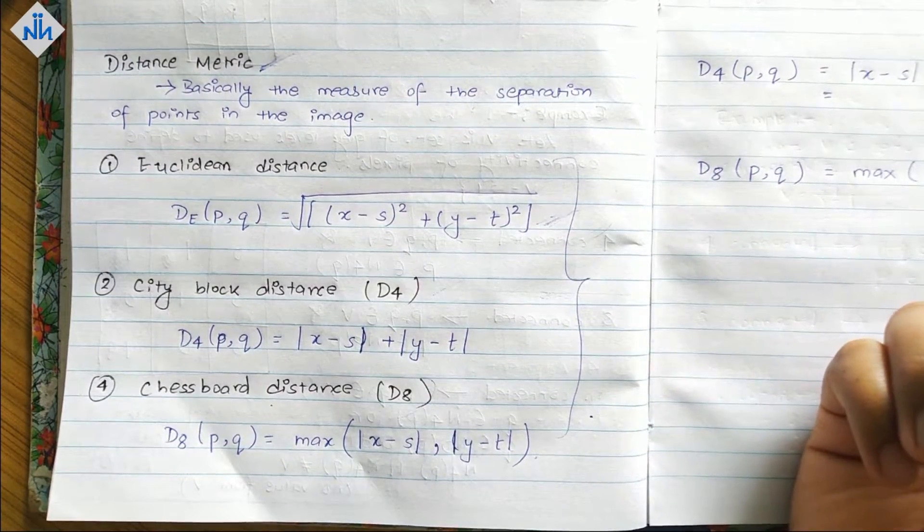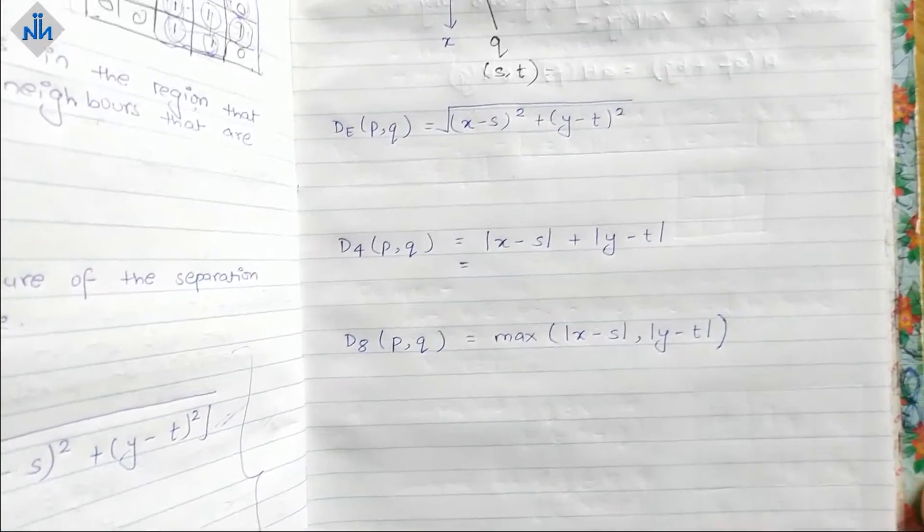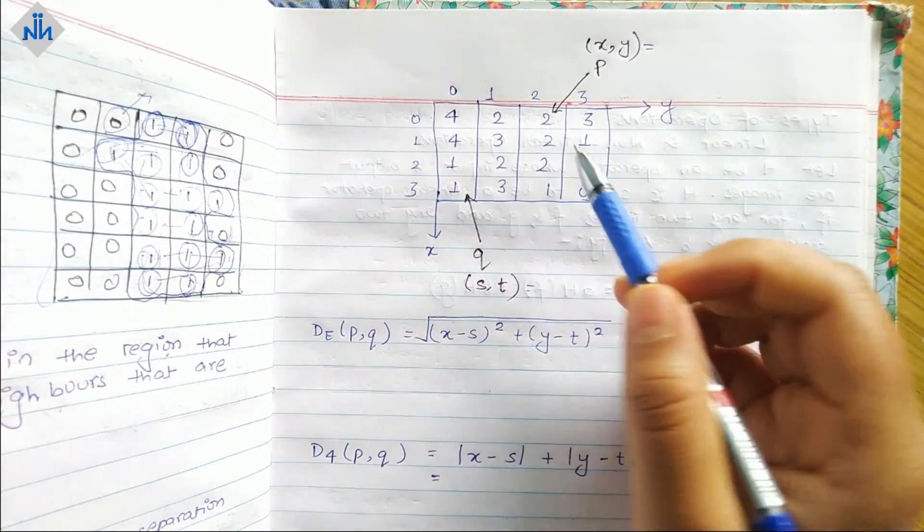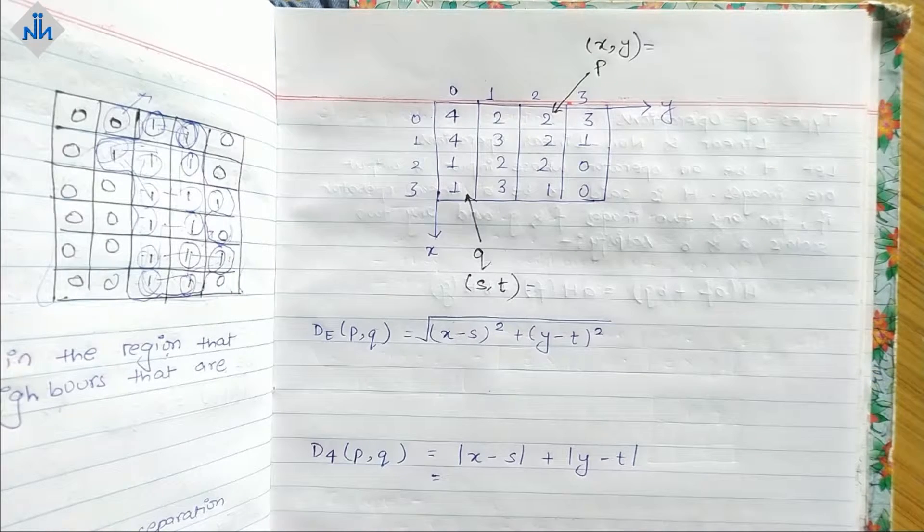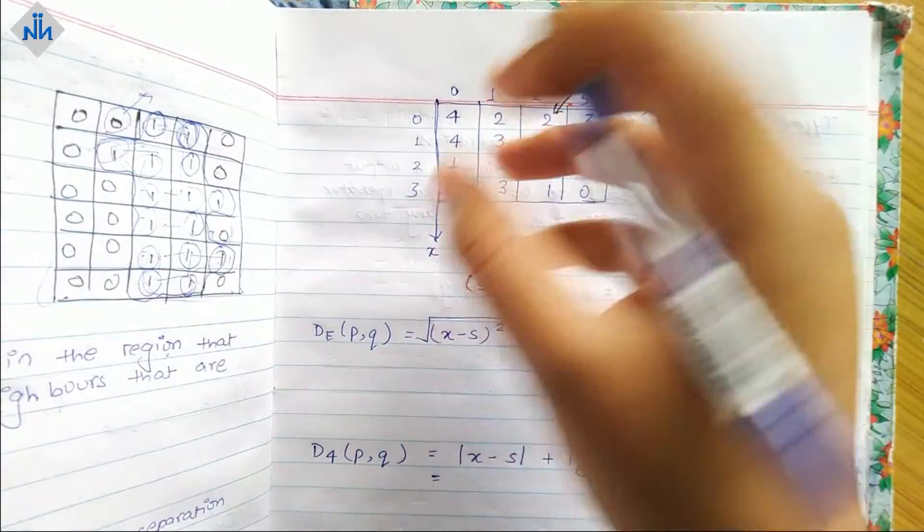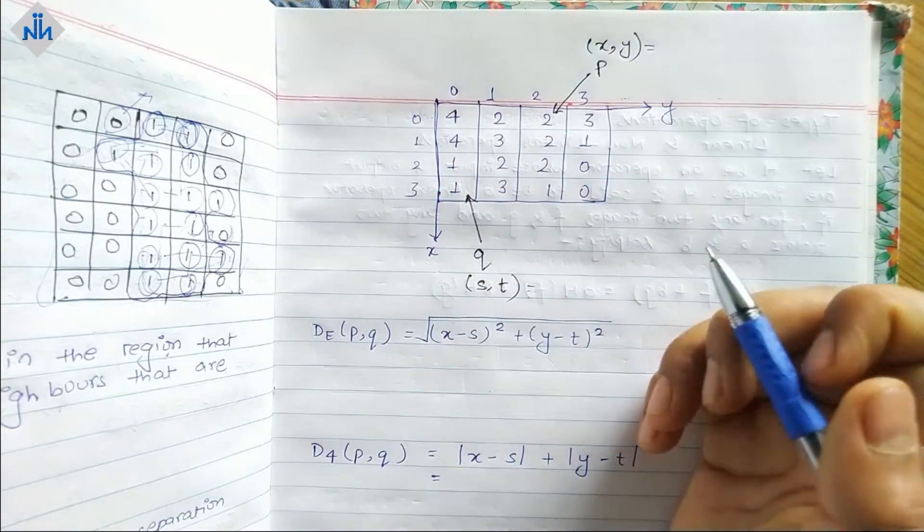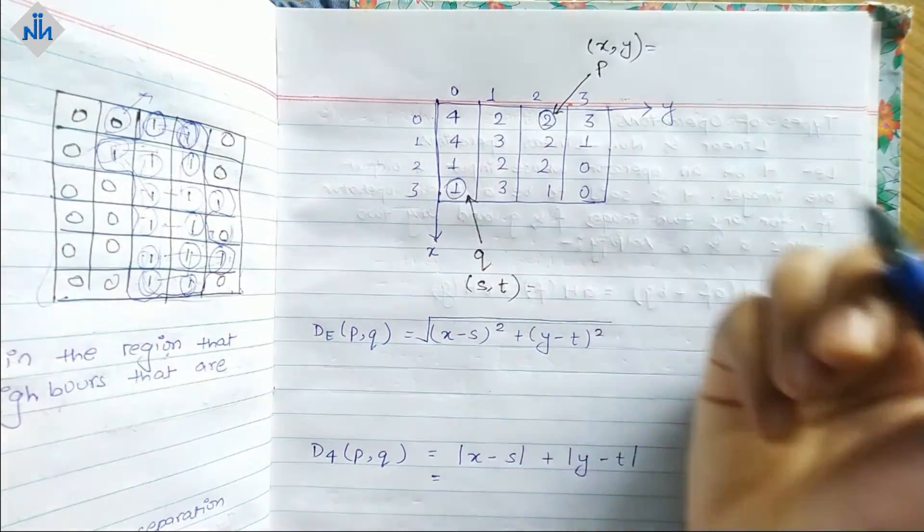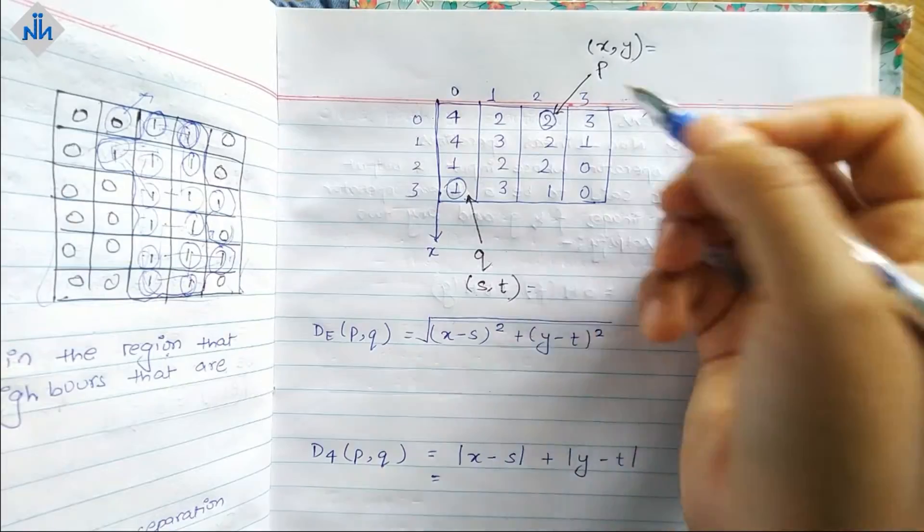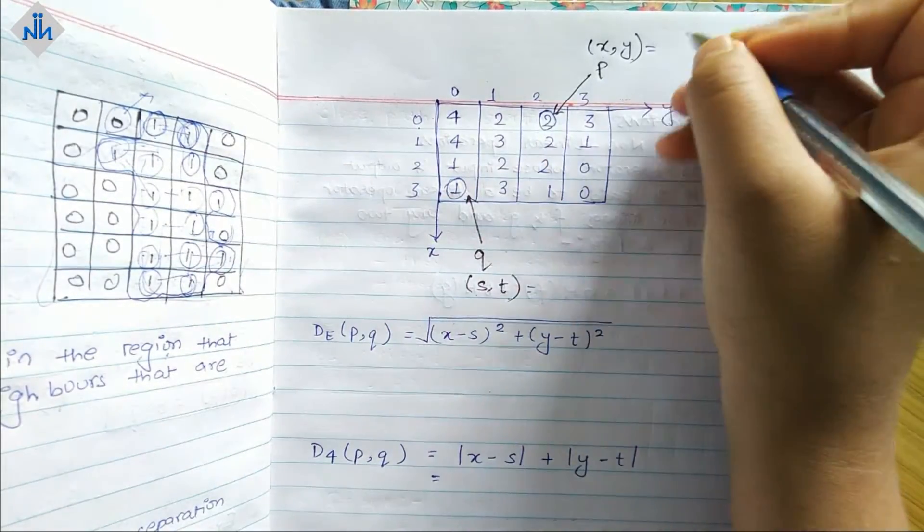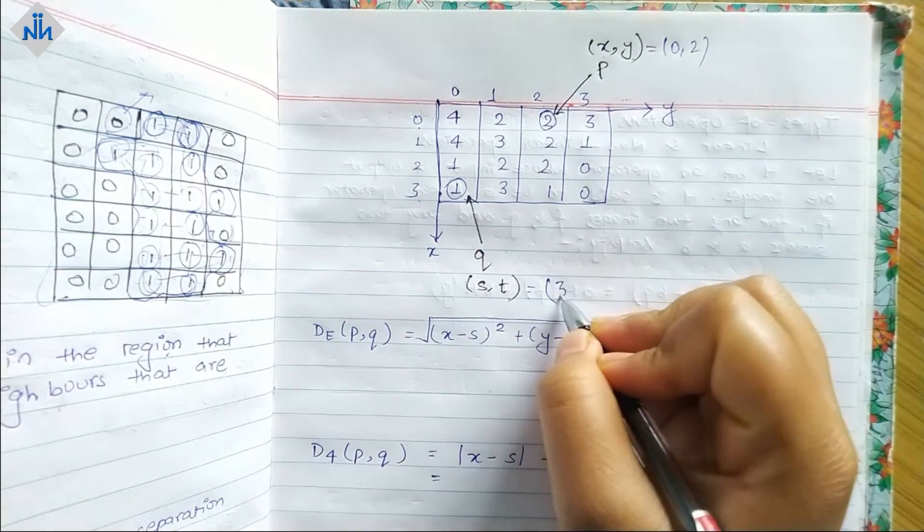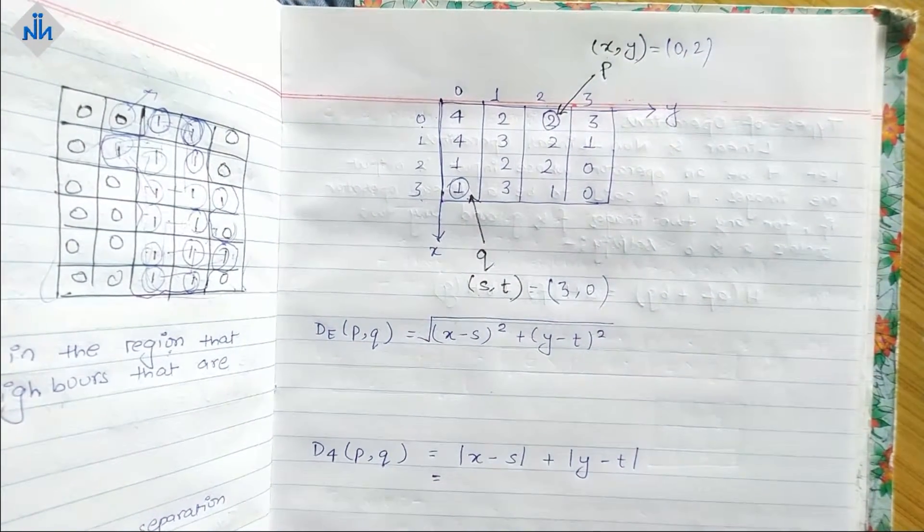Now let's look at an example. We have this image and we will have to find out the Euclidean, City block, and Chessboard distance. Here I have defined this axis as x and this as y. This one is P and this one is Q. We have to find out the distance between P and Q. Let's take P as (x,y) and Q as (s,t). The coordinates of P are (0,2) and Q are (3,0).